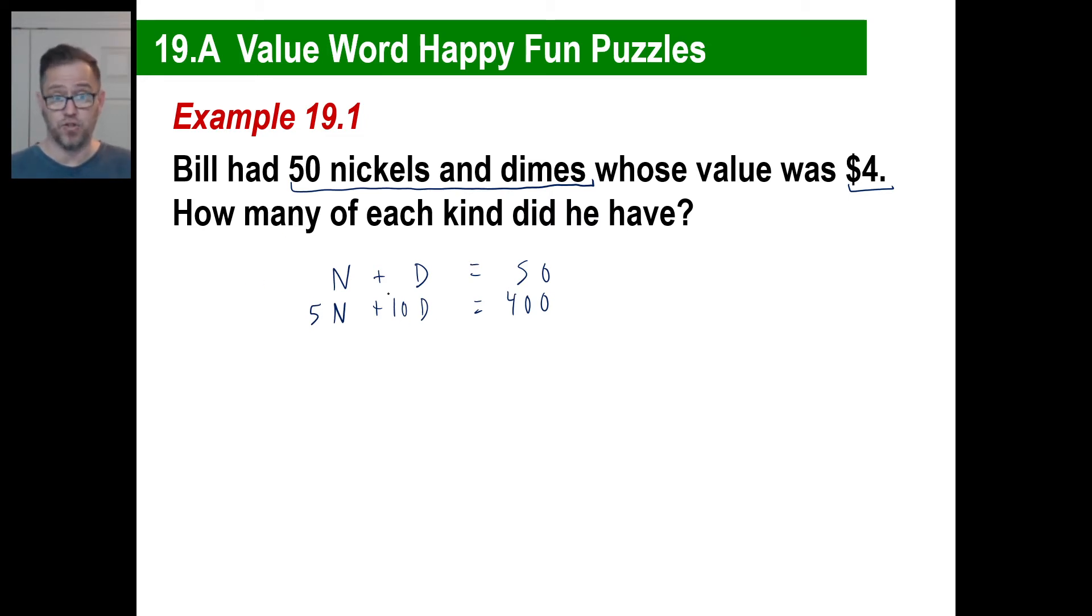Now, again, you can use substitution. You can use elimination, whatever you want. Whichever one of those you want, you go ahead and do it. I'm just going to go ahead and use elimination. I'm going to multiply this by 5, the whole line by 5, this by 5, and then 50 times 5 is 250. Now I'm going to subtract. Yoink, that's gone.